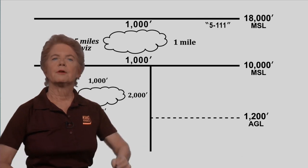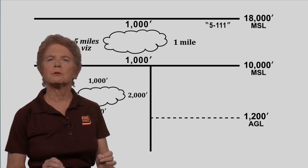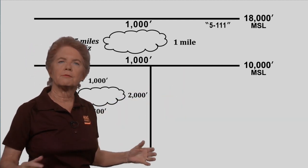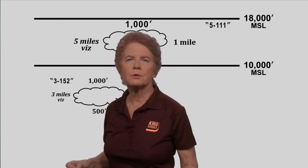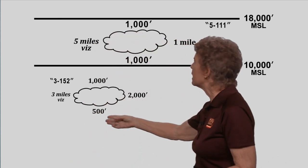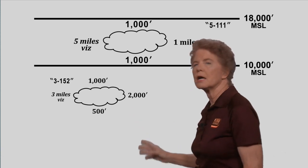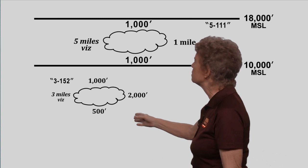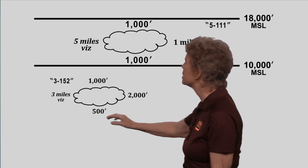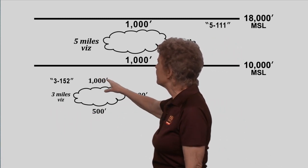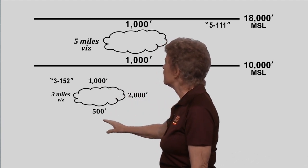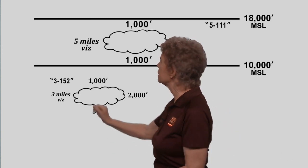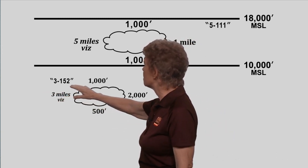At night, there's no longer a distinction between being above or below 1,200 feet AGL. In fact, there's no longer a distinction between uncontrolled and controlled airspace. At night, the rules in uncontrolled airspace are the same as the rules in controlled airspace. Three miles visibility, 1,000 feet above, 500 feet below, and 2,000 feet horizontally. Again, that's our three Cessna 152s.